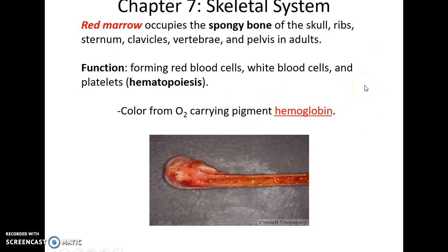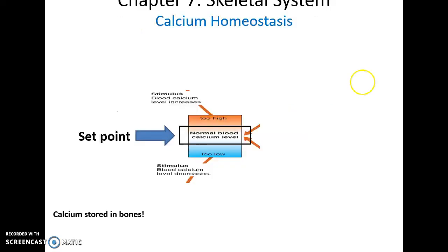Red bone marrow occupies the spongy bone areas of the skull, ribs, sternum, clavicle, vertebrae, and others, and produces all of the blood cells: red blood cells, white blood cells, and platelets — a process called hematopoiesis. Red bone marrow is red because of the pigment protein hemoglobin, which carries oxygen and is also red.